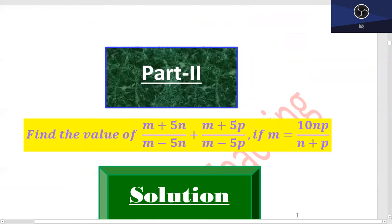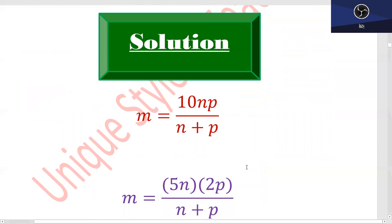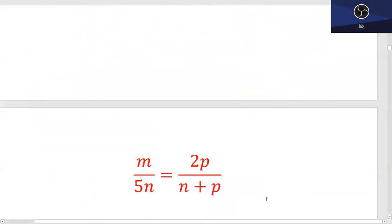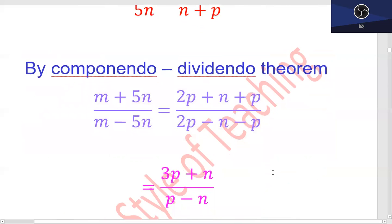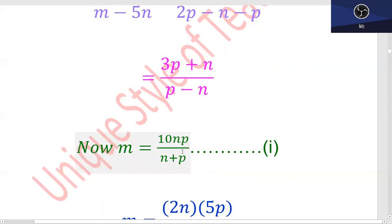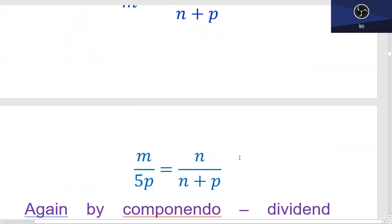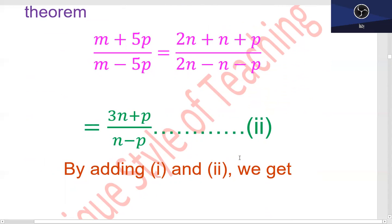Part 2 میں دیکھیے: (m + 5n)/(m - 5n) + (m + 5p)/(m - 5p), if m is equal to 10np/(n + p) — almost وہی کام ہے جو Part 1 میں کیا گیا ہے۔ آپ نے 10 کے factors بنائیں گے: 5 اور 2، 5×2 = 10 ہوتے ہیں، اور n اور p کو الگ لیا ہے۔ آپ دیکھیں (m + 5n) پر again componendo اور dividendo method use کیا، یہاں پہ ایک value آ گئی: (3p + n)/(p - n)۔